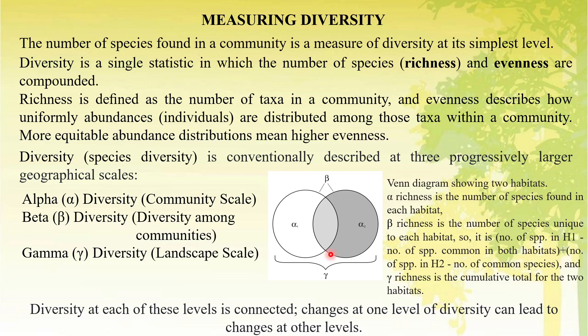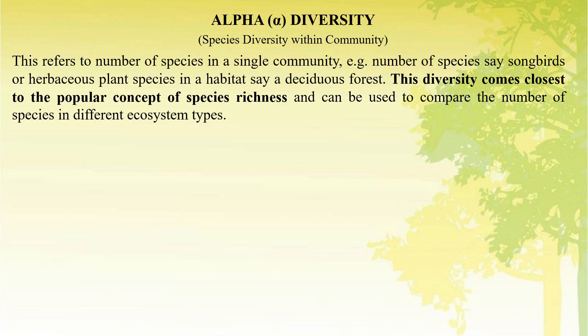Diversity at each of these levels is connected, and changes at one level of diversity can lead to changes at other levels. Alpha diversity refers to the number of species in a single community — for example, songbird or herbaceous plant species in a habitat such as a deciduous forest. This diversity comes closest to the popular concept of species and can be used to compare the number of species in different ecosystem types.